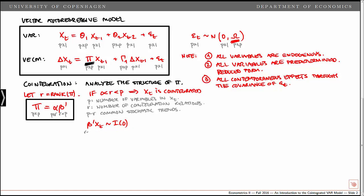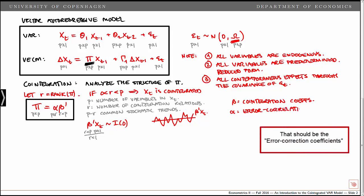The dimensions of beta prime xt: beta prime is r-by-p and xt is p-by-1, giving r-by-1 stationary linear combinations of the variables in xt. So beta prime xt is a stationary relation given that the variables are cointegrated. With p variables — for example p equal to 3 — r the number of cointegration relations could be 1 or 2. The coefficients beta are our cointegration coefficients, while alpha contains our error correction coefficients, telling us which variables are error-correcting whenever the system is out of equilibrium.